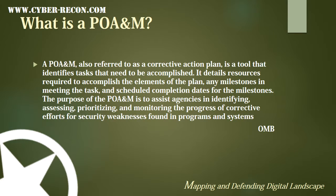It's important to know what exactly a POAM is. A POAM is a Plan of Actions and Milestones for an information system, or even a common control set. According to OMB, a POAM — also referred to as a corrective action plan — is a tool that identifies tasks that need to be accomplished. It details resources required to accomplish the elements of the plan, any milestones in meeting the task, and scheduled completion dates for the milestones. The purpose of the POAM is to assist agencies in identifying, assessing, and prioritizing and monitoring the progress of corrective efforts for security weaknesses found in programs and systems.